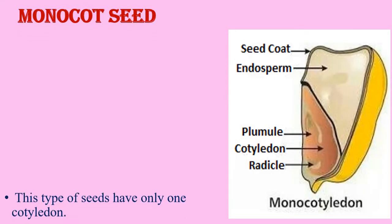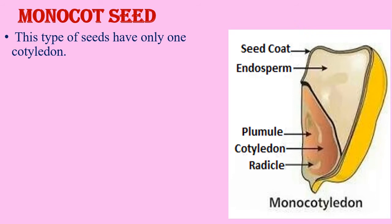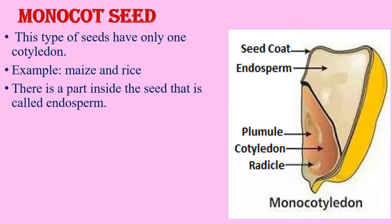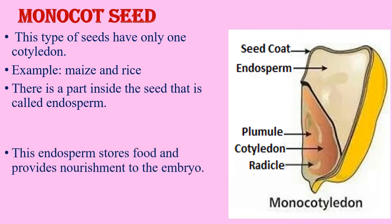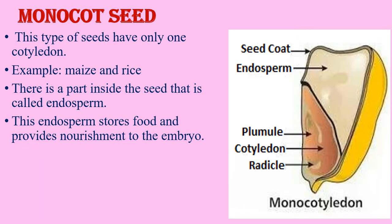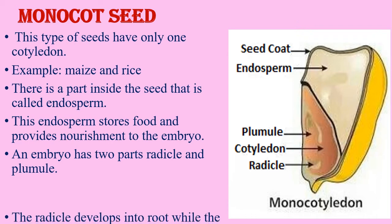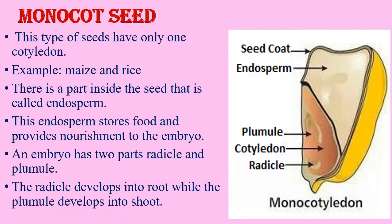Monocot seed: this type of seed has only one cotyledon. Examples are maize and rice. There is a part inside the seed called the endosperm. This endosperm stores food and provides nourishment to the embryo. An embryo has two parts — the radicle and the plumule. The radicle develops into a root while the plumule develops into a shoot.